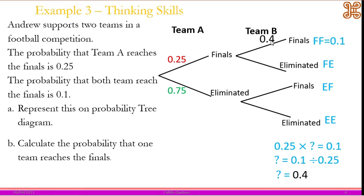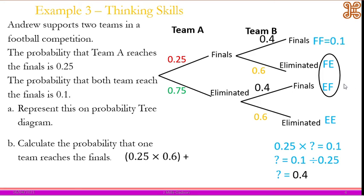If team B's probability is 0.4, then its complement is 0.6, and the same repeats on the second branch. To work out the probability that exactly one team reaches the final — that is: final then eliminated, or eliminated then final — we calculate 0.25 times 0.6 plus 0.75 times 0.4, and that gives us 0.45.